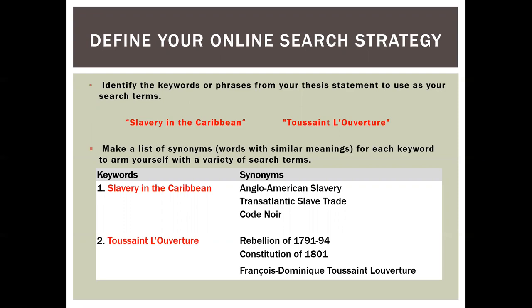These key words can also help us explore other avenues of information or rework and redirect our research. The key words or phrases we will use are 'slavery in the Caribbean' and 'Toussaint-Louverture.' When identifying your keywords or phrases, it's suggested that you also craft a list of synonyms — words with similar meanings — to help you obtain as much information appropriate for your research.